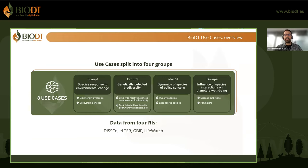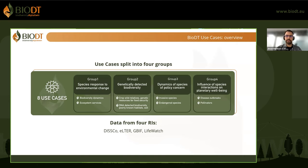Now I come to the use cases. We have different groups: species response to environmental change; genetically detected biodiversity; dynamics of species of policy concern; and influence of species interactions on planetary well-being. The data come from four research infrastructures: GBIF, ELTER, GPF, and LifeWatch.